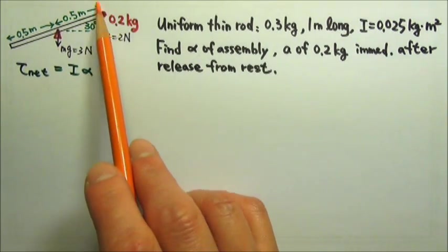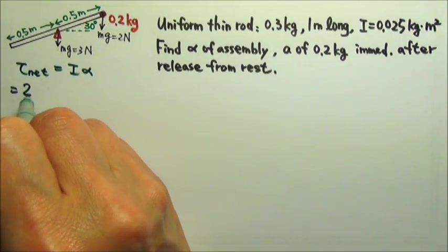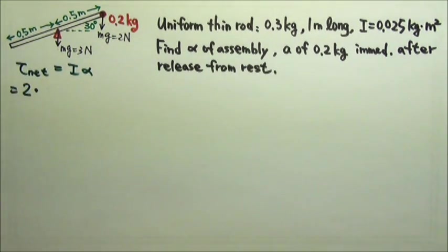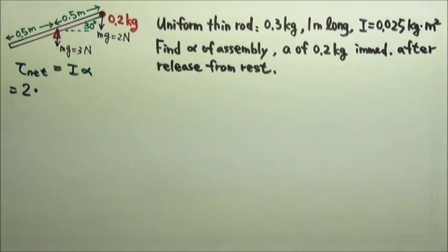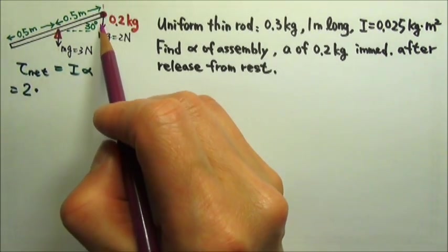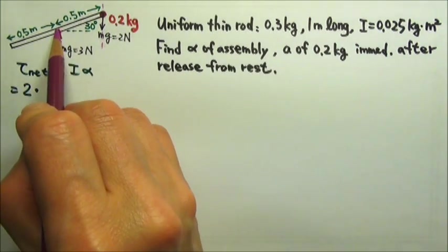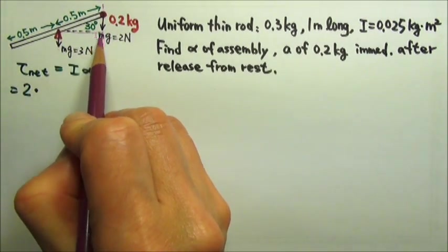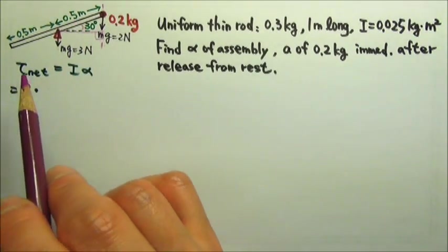The only force that provides torque is the 2 newtons. So the net torque is the force 2 newtons times its lever arm. The lever arm for this force is the distance between the line of force and the axis, so it is this perpendicular distance.